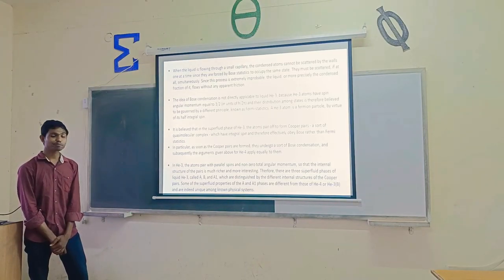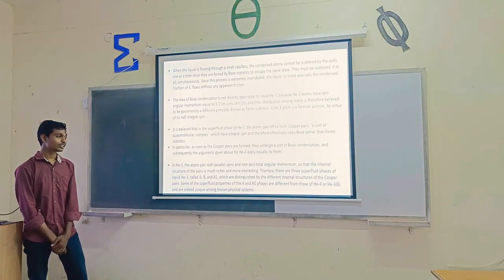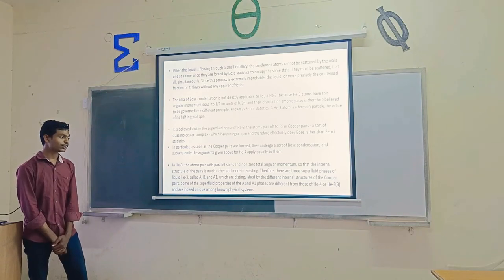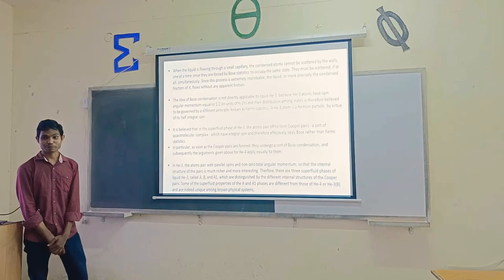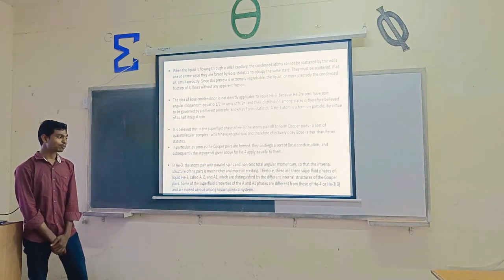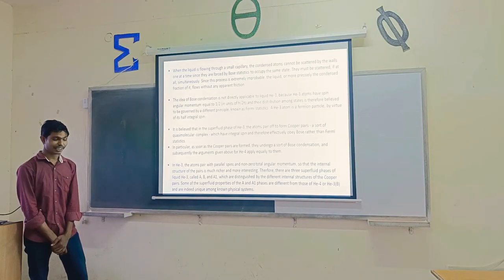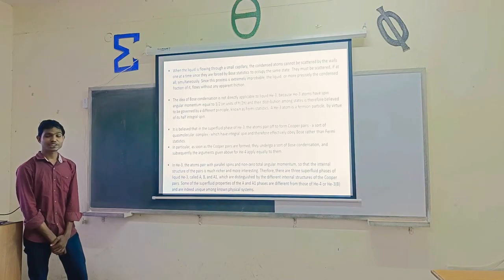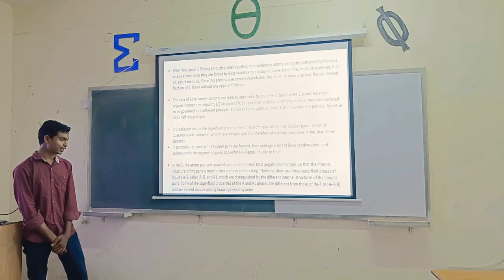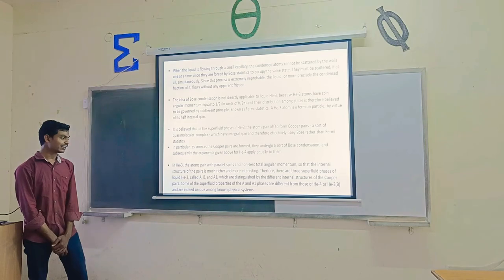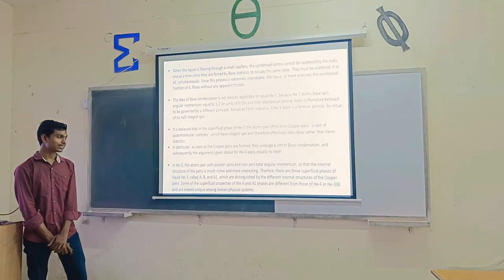Therefore, there are three superfluid phases for helium-3, called A, B, and A1, which are distinguished by different internal structures of Cooper pairs. Some superfluid properties of phases A and A1 are different from those of helium-4 and helium-3 B phase.